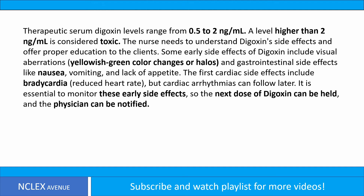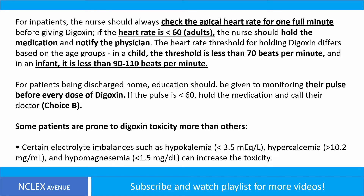The nurse needs to understand digoxin's side effects and offer proper education to clients. Some early side effects include visual aberrations such as yellowish-green color changes or halos, and gastrointestinal side effects like nausea, vomiting, and lack of appetite. The first cardiac side effect is bradycardia, but arrhythmias can follow later. It is essential to monitor these early side effects so the next dose can be held and the physician notified. For inpatients, the nurse should check the apical heart rate for one full minute before giving digoxin; if less than 60 in adults, hold the medication and notify the physician.